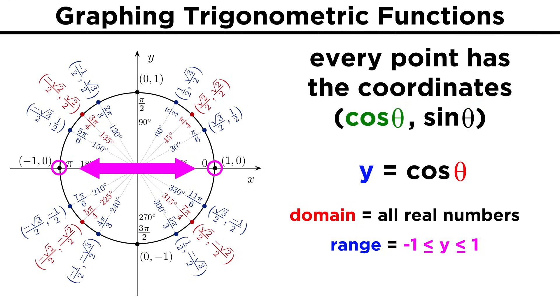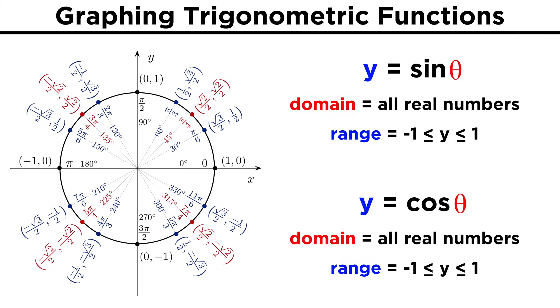The same goes for cosine theta. We could plug in any angle, but if we look at the x values of these points, they always fall between negative one and one. So both sine and cosine will have a domain of all real numbers, and a range of negative one to one.